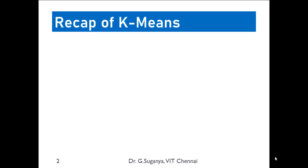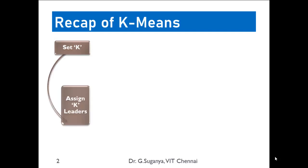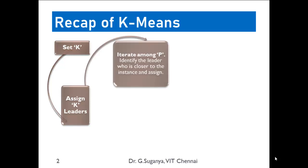Let us see the flow of the k-means algorithm. We have to initialize k, which is the number of clusters we want, and we have to randomly pick up k leaders for the process to start. Then from the dataset, you take every instance and identify to which leader the instance is closer, and then assign it to the corresponding cluster. You have to repeat this for all the instances available in your dataset.